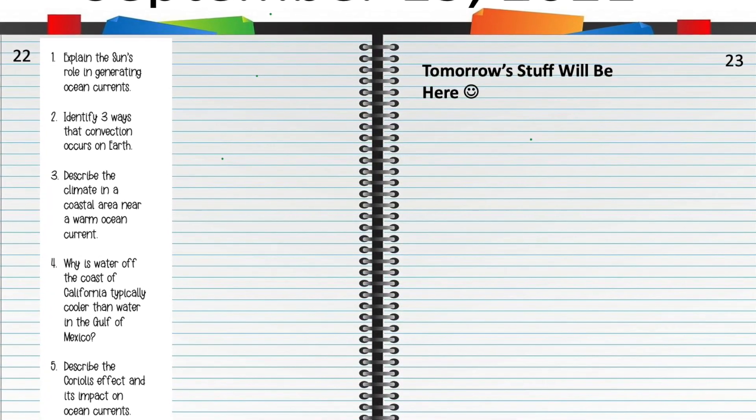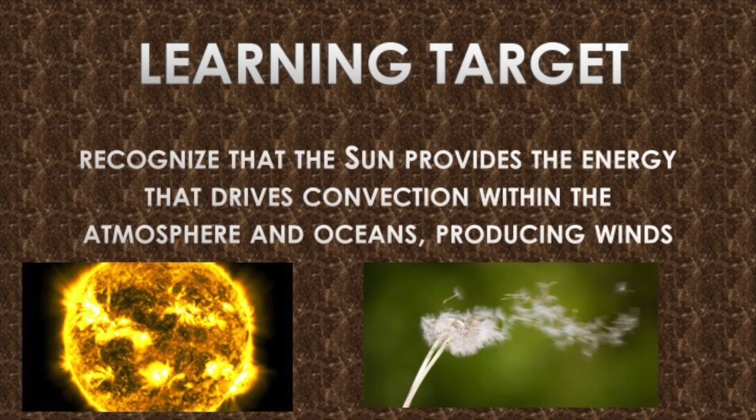So today's learning target is that you should be able to recognize that the sun provides the energy that drives convection within the atmosphere and oceans, producing winds. Now, I don't think we might not quite get to wind today, but we will definitely look at the sun's role in making the currents and causing atmospheric changes.